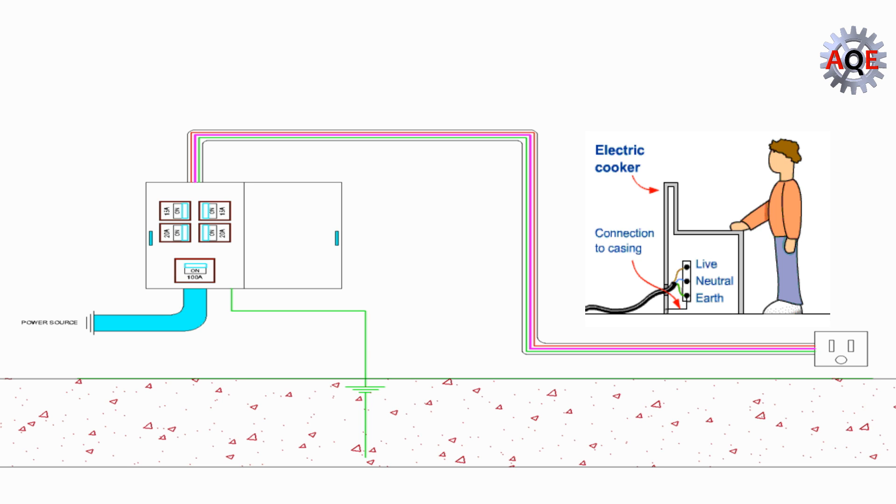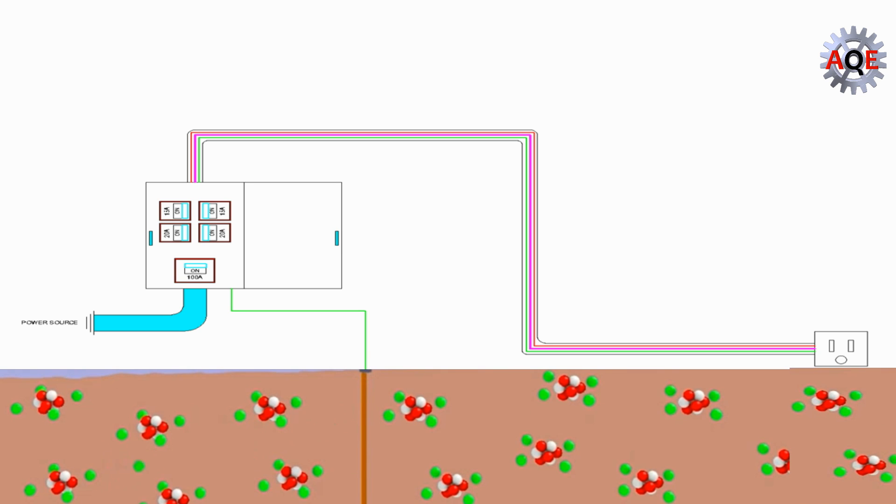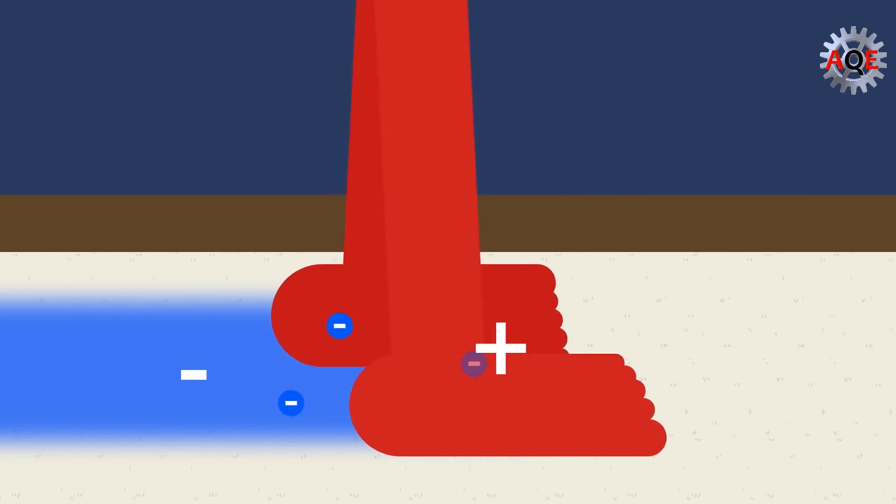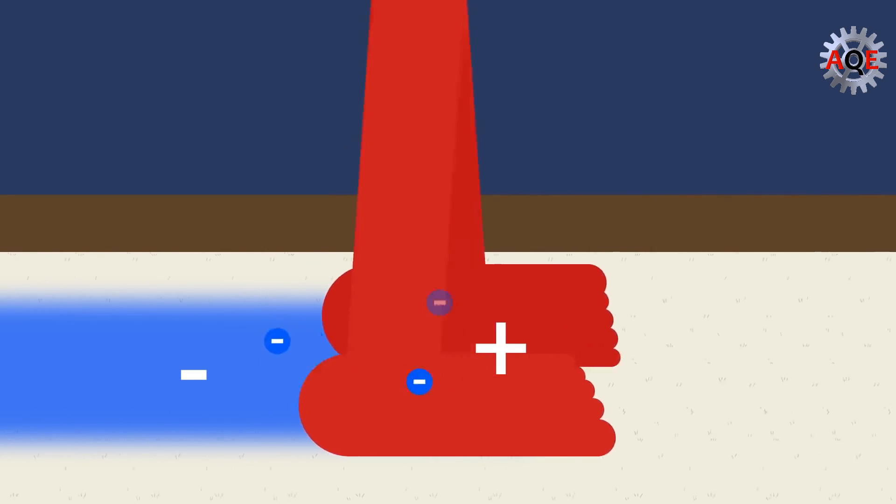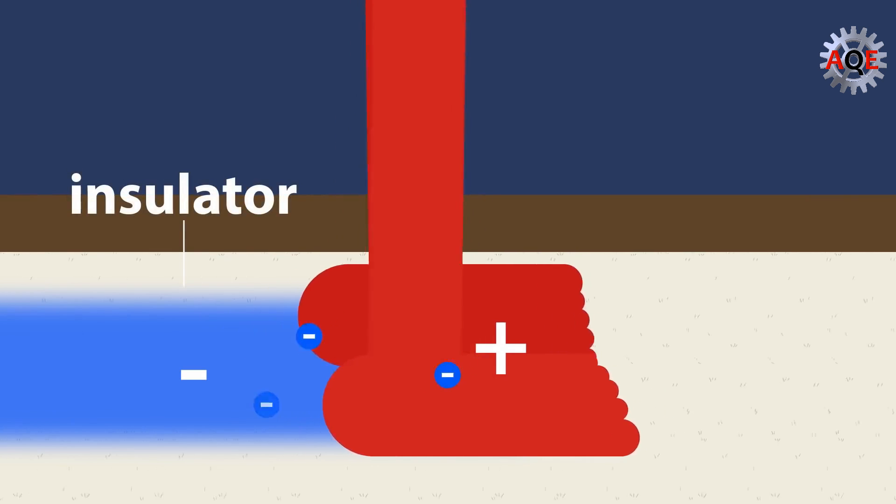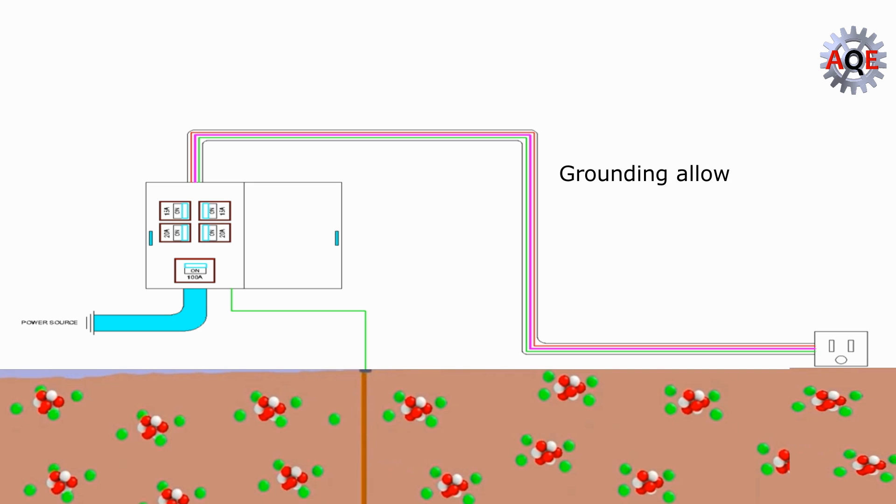Grounding works by leveraging the negative electrical properties of the ground. The ground on which you walk has a negative electrical charge. Therefore, it's able to neutralize positively charged electricity. Grounding allows excess electricity to discharge through the ground.